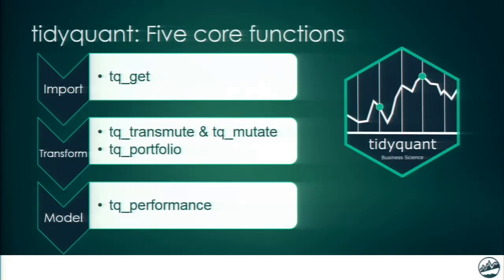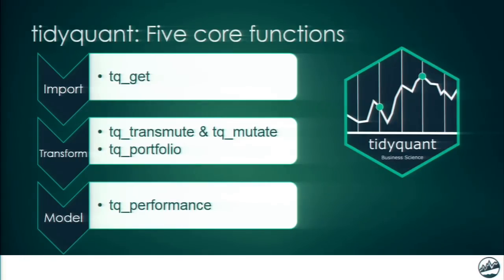There are five core functions. There's TQ-Get, which is to get data. There's TQ-Transmute and TQ-Mutate, which allow you to apply QuantMod and TTR functions such as period returns, simple moving average, or Bollinger Bands right to the data. We've got TQ-Portfolio for aggregating portfolios, and TQ-Performance for the PerformanceAnalytics functions. You'll notice it follows the import, transform, and model workflow — the very same type of workflow you have in the Tidyverse.